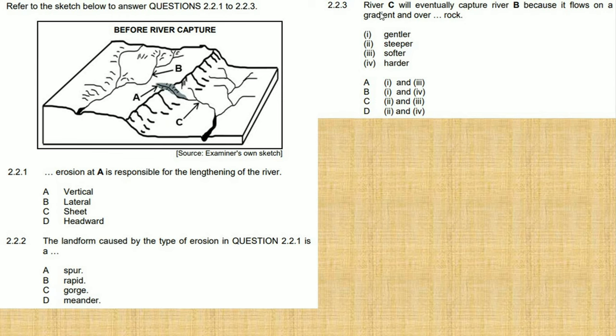And then 2.2.3: River C will eventually capture river B because it flows on a gradient and over rock. So river C will eventually capture river B. You have your options there A, B, C, and D.